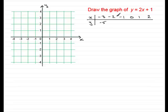Similarly, putting minus 2 in: 2 times minus 2 is minus 4, add 1 is minus 3. And if we work out the other values — I'll leave it up to you — you should find that you get minus 1, 1, 3, and 5.